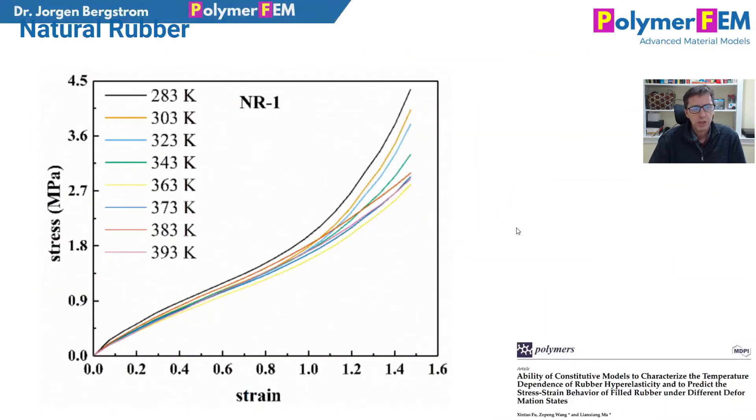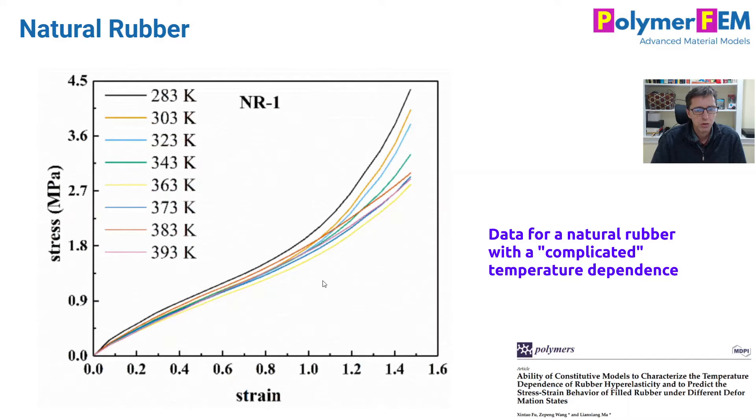So let's get started by talking a little bit about natural rubber. Here's just a graph that typically people get when they do tension tests at different temperatures on a piece of rubber. This is data from an article that you see in the bottom right corner here. And if you look carefully at this, you can see that there's something odd going on here. It looks like the data perhaps is very scattered and perhaps there's some experimental errors or something.